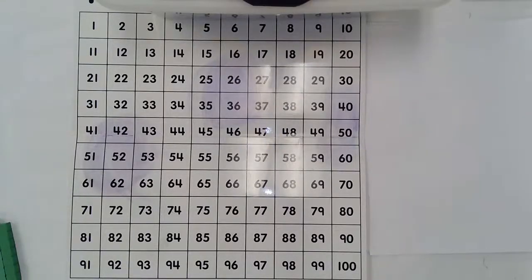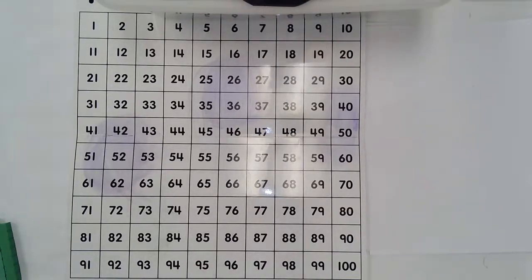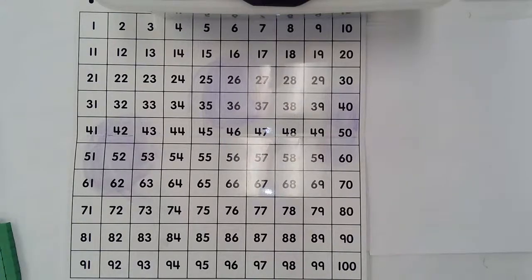Today for our math strategies video we're going to be adding tens and adding ones. We're going to be using place value blocks, hundreds charts, and number bonds to help us find the sum or the answer to an addition problem. So let's go ahead and get started.